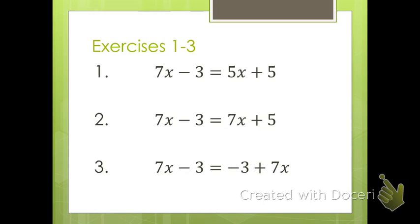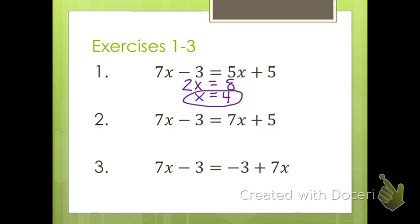For exercise one, it wasn't particularly surprising. We went through the steps to solve it and got something like 2x equals 8, so x equals 4. x equals 4 was a solution to this equation, because when we plug in 4, we get 7 times 4 minus 4 is 28, minus 3 is 25, and then 5 times 4 is 20, plus 5 is 25. So x equals 4 is a solution that checks out for that equation.